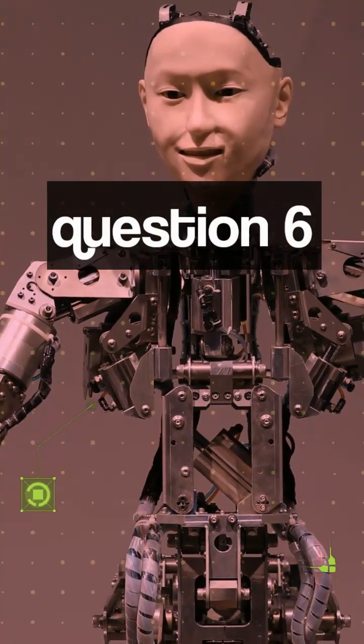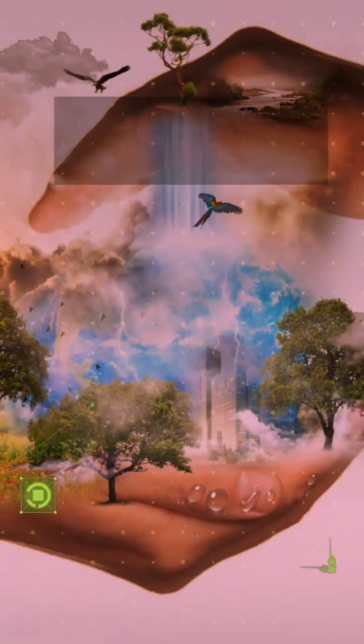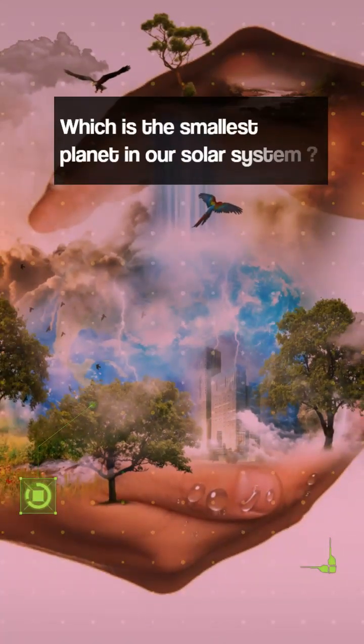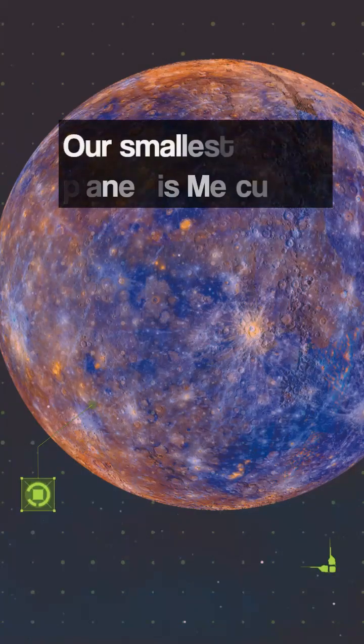Question 6. Which is the smallest planet in our solar system? Our smallest planet is Mercury.